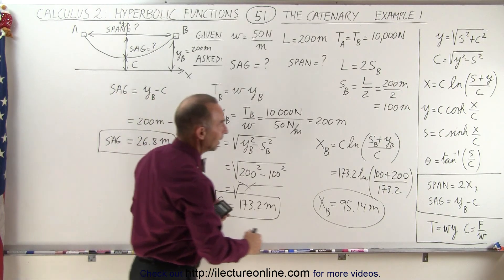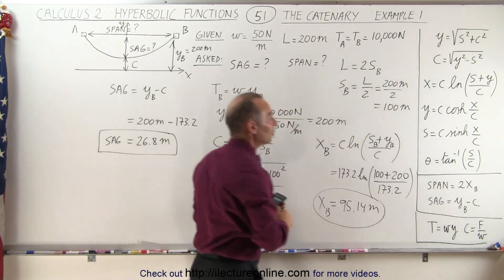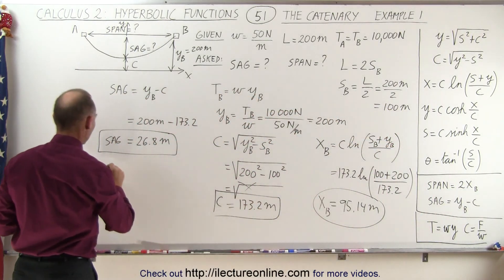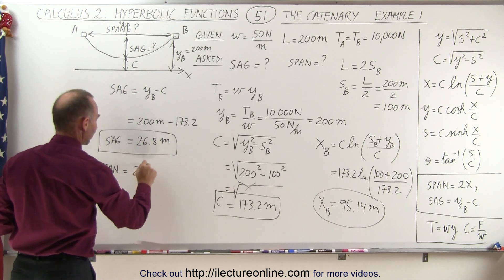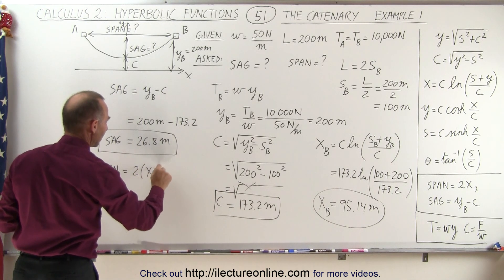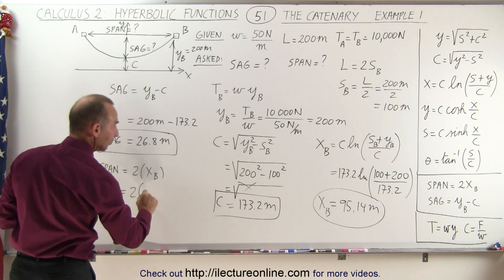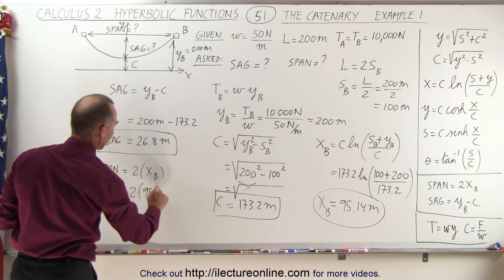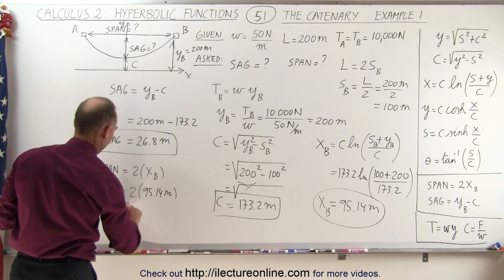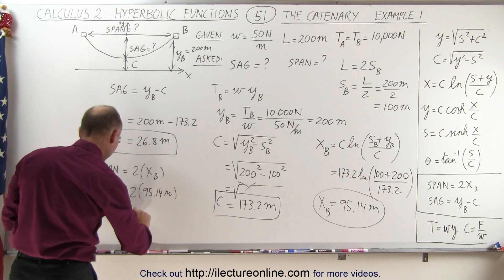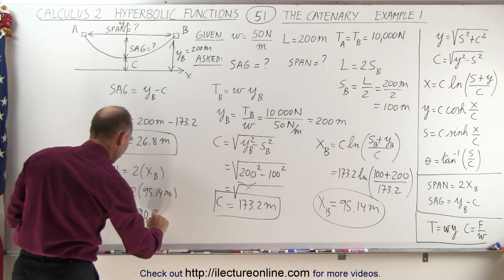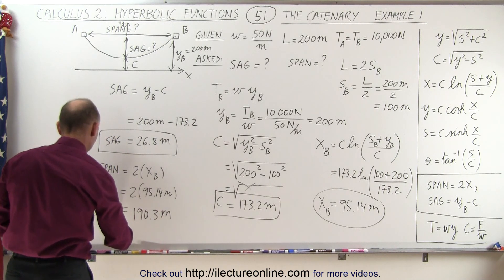And we know that the span is twice that distance, two times X sub B, so the span is equal to 2 times X sub B, which is equal to 2 times 95.14 meters. And so let's see here, times 2, we get this equal to 190.3 meters to one decimal place.